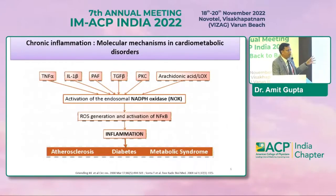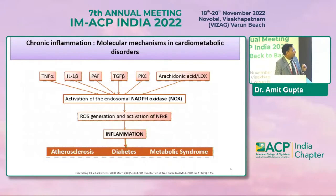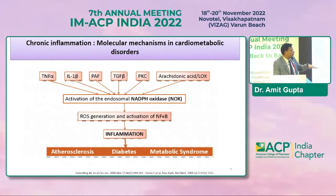Various inflammatory markers — TNF-alpha, interleukin-1-beta, platelet activating factor, TGF-beta, protein kinase C, arachidonic acid — ultimately all lead to activation of the endosomal NADPH oxidase, generating reactive oxygen species and activation of the NF-kappa-B pathway. This leads to inflammation, which itself is responsible for the metabolic syndrome, atherosclerosis, as well as diabetes.